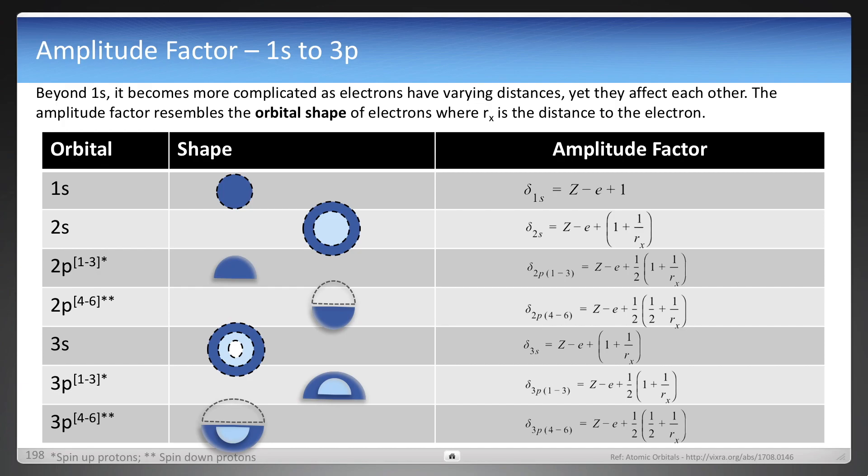And so the amplitude factor actually has a pattern, and that pattern follows the shape of orbitals. It's because that's where the other electrons reside. And it does require knowing the distance to the electron that is being measured, which is rx. But this is the equations for the patterns for amplitude factor, at least up to the third orbital, the third shell.